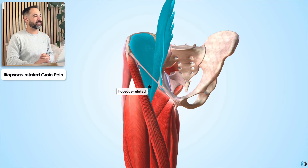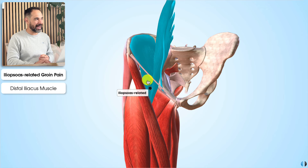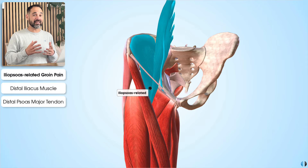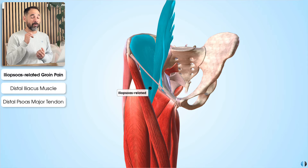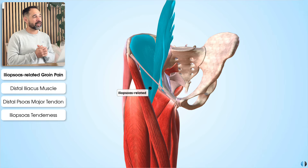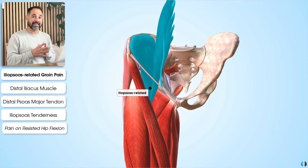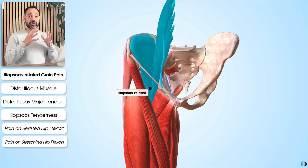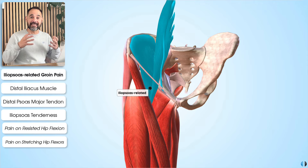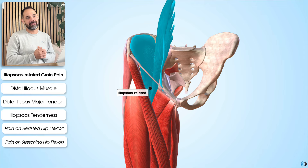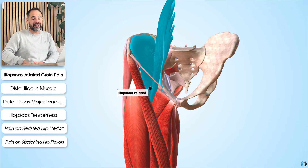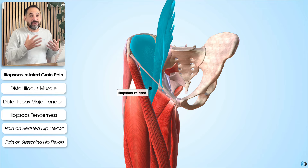For iliopsoas-related groin pain, we might be thinking about the distal iliacus muscle, the distal iliacus tendon, or the distal psoas major tendon. The experts agreed that iliopsoas tenderness would highlight this potential diagnosis, and that iliopsoas-related groin pain was more likely if the patient had pain on resisted hip flexion and/or pain on stretching of the hip flexors. Note the term 'more likely' — we know that iliopsoas-related symptoms are over-diagnosed in medicine.